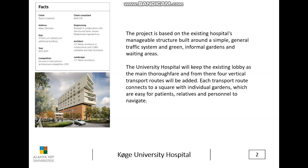The university hospital will keep the existing lobby as the main entry point, and from there four vertical transport routes will be added. Each transport route connects to squares with individual gardens, which are easy for patients, relatives, and staff to navigate.